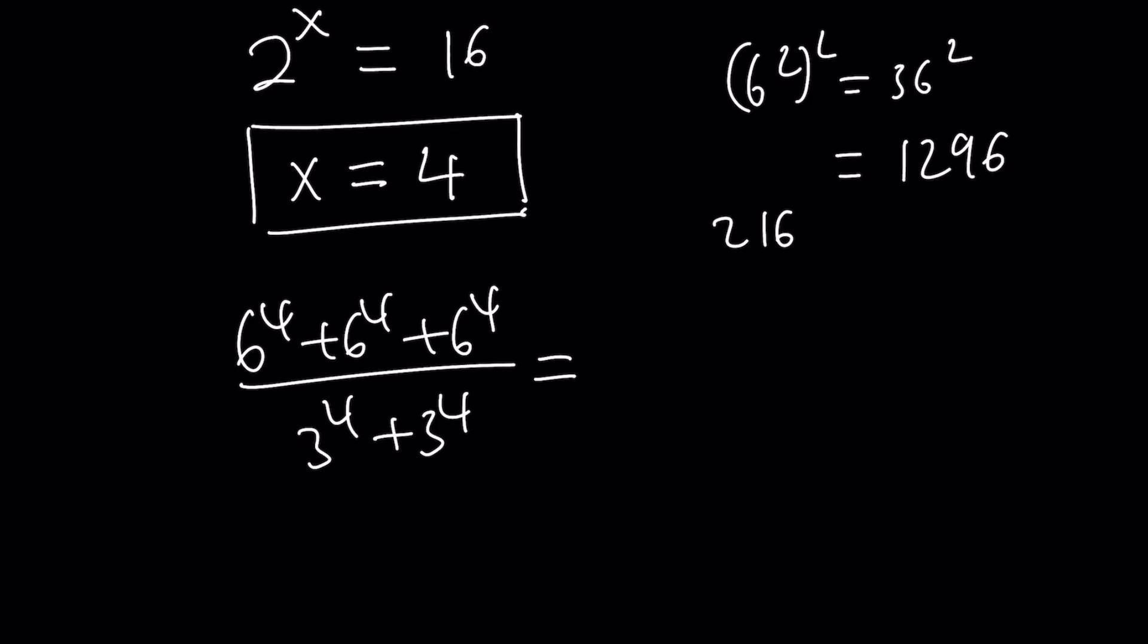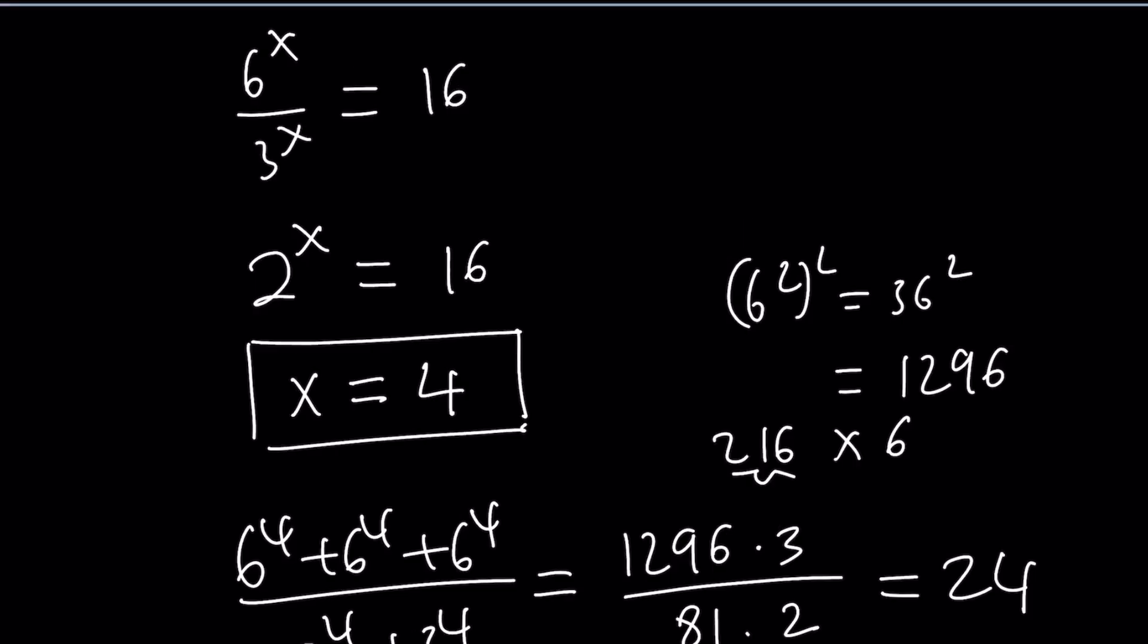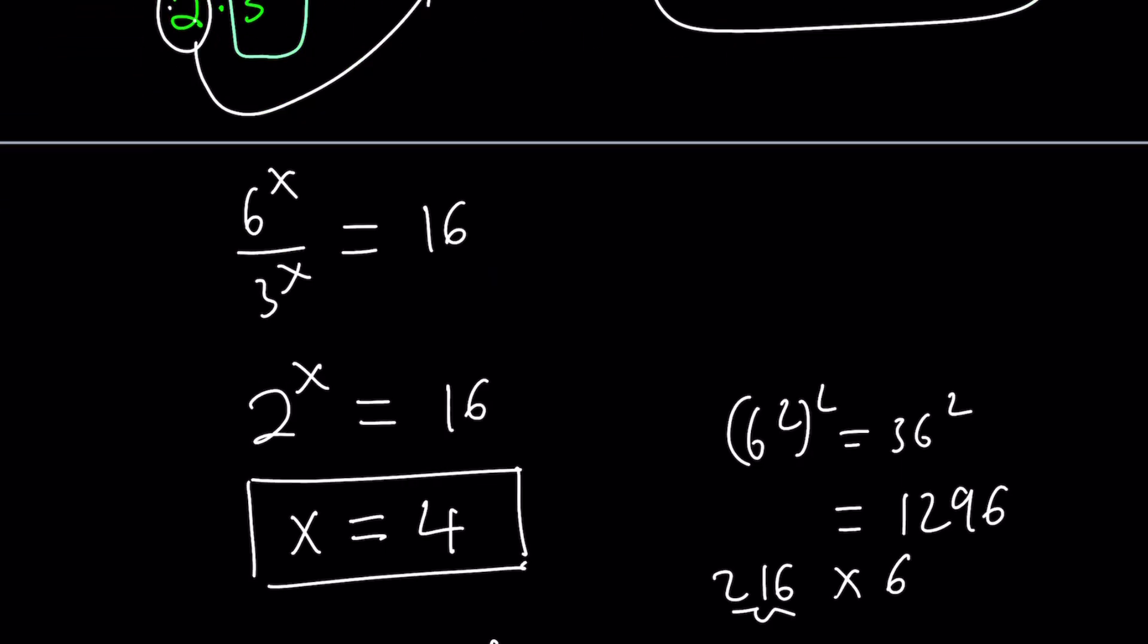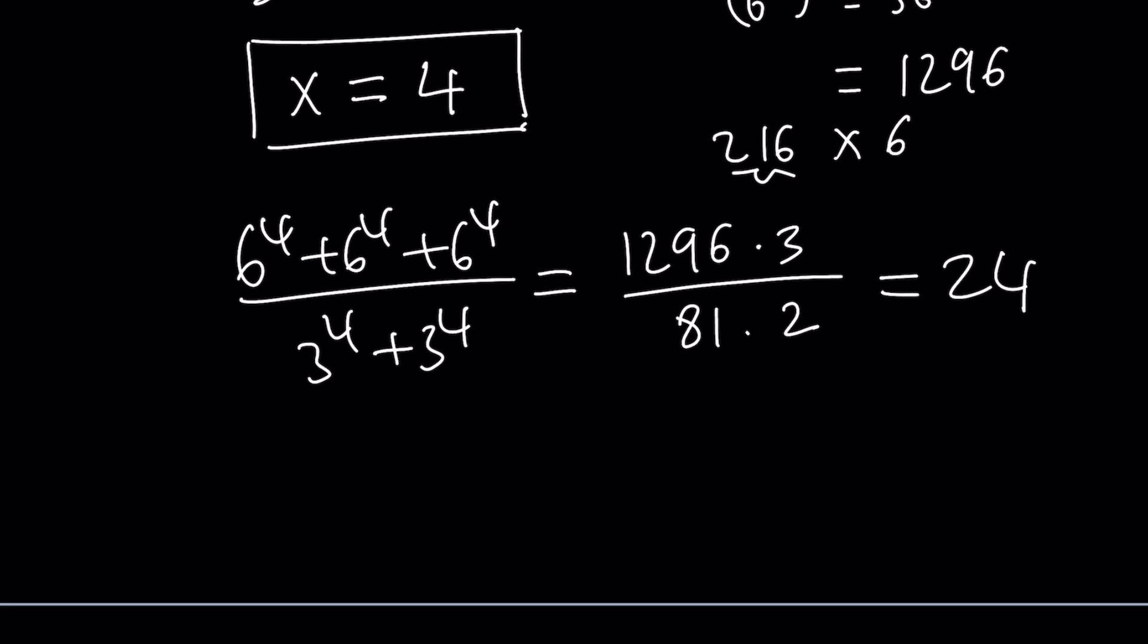Or you can write it as 216 times 6, because this is 6^3. So that's 1,296 plus that—or we can write it times 3. 3^4 is 81 times 2. You can do the math and end up with the same answer. What is that answer? 24, of course, because our original equation equals 24. When you got 24, that means you got the right answer. This can be simplified, and when you divide, you'll hopefully get the answer.